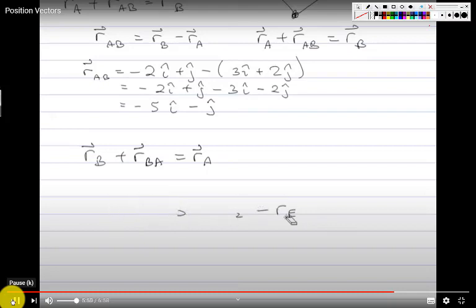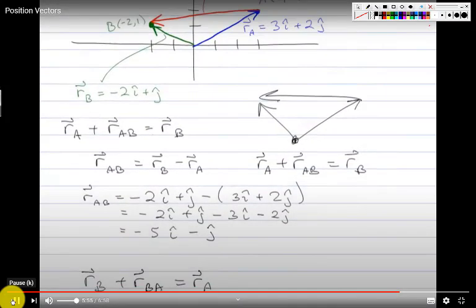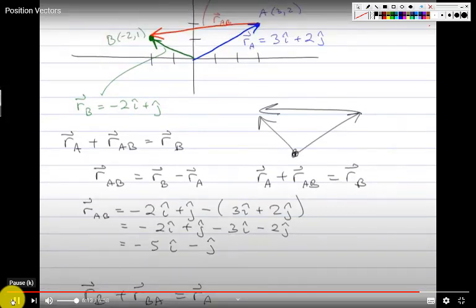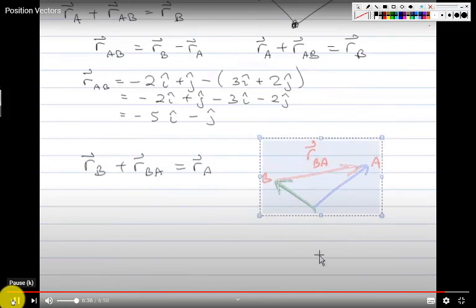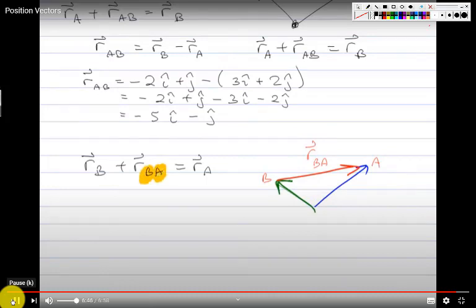The basic concept of position vectors is to find the vector between two given points in space. Usually if you see a single letter, that means you are starting from the origin. Start and finish is a useful way to think about head and tail.